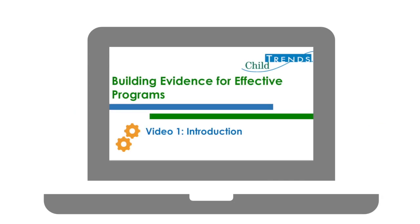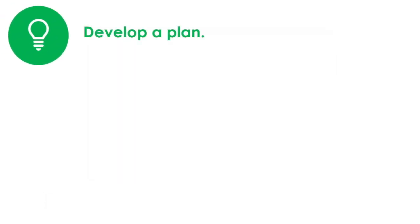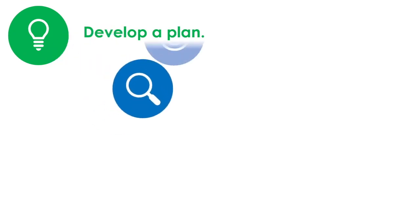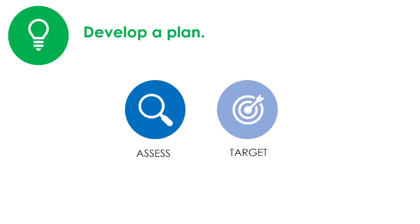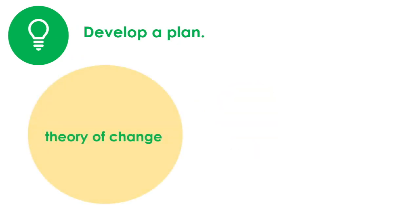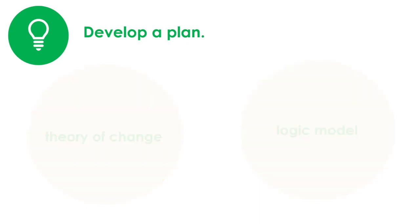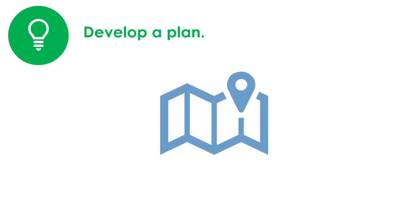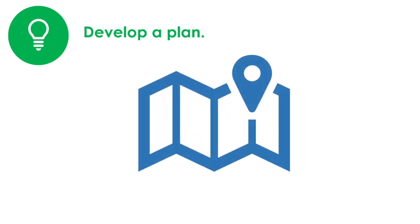For a more detailed introduction to the full process, check out the first video in this series. Now let's talk about Step 3. In this step, you'll develop a plan that describes how you will address the need you identified in Steps 1 and 2. To help guide your planning, you'll want to develop a theory of change and a logic model. These documents are your roadmap as you build and improve your program.